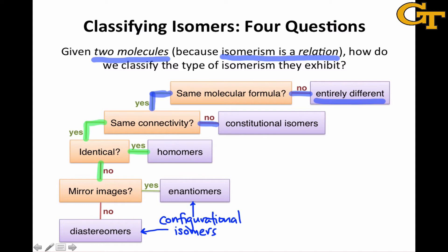If the two molecules under investigation have the same connectivity, differ from one another, and are mirror images, then they're what we call enantiomers. Enantiomers are defined as non-identical mirror images. If the molecules have the same connectivity but are not mirror images, then they're what we call diastereomers. So this is the basic process — let's apply it to a few examples.